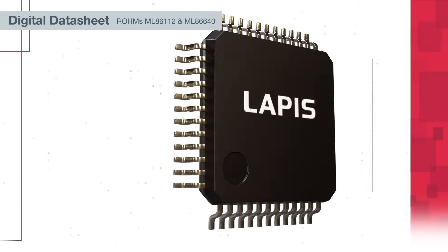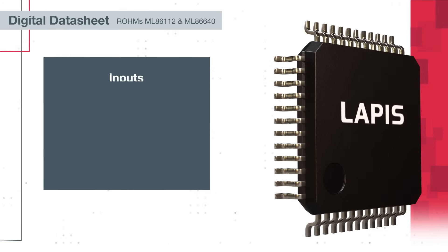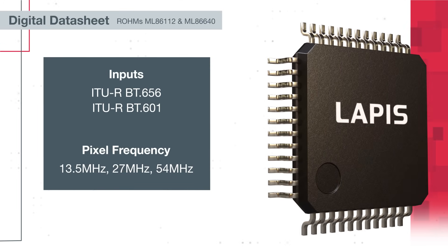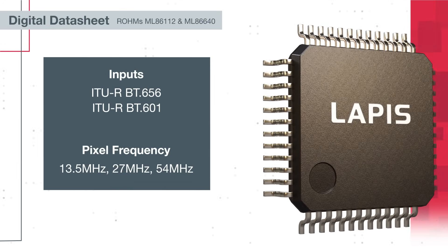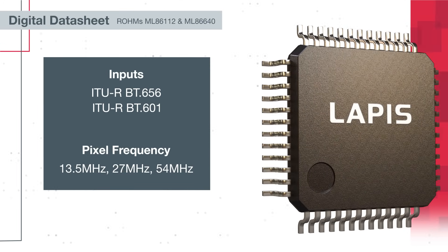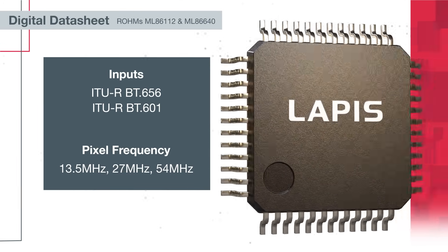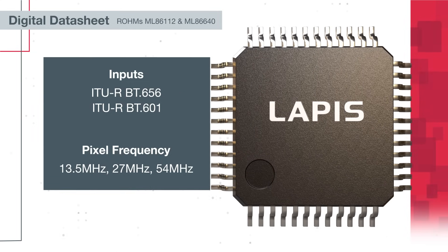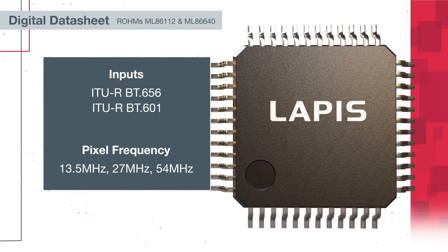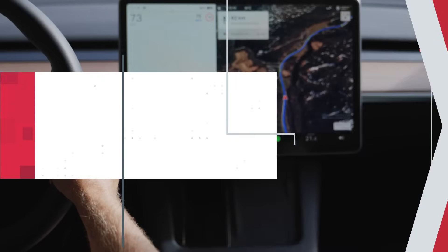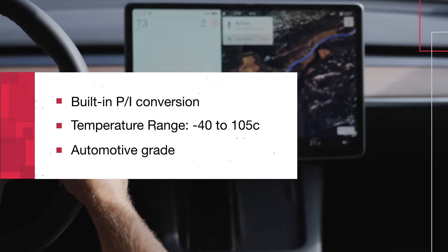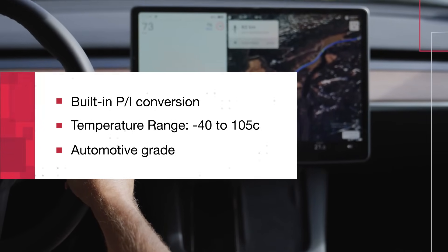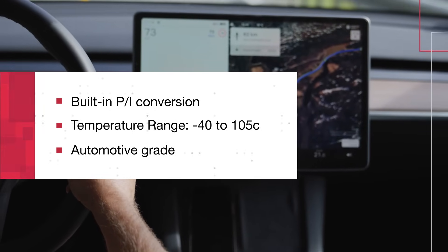The encoder converts digital image input such as ITU-R BT.656 and ITU-R BT.601 with a pixel frequency up to 54 megahertz. The device has a built-in PI conversion function that can generate interlaced video output from progressive digital input.